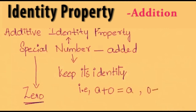For example, if 12 is added to a number and we get the sum as 12, that particular number is the additive identity, which is 0. So, 12 plus 0 is equal to 12.